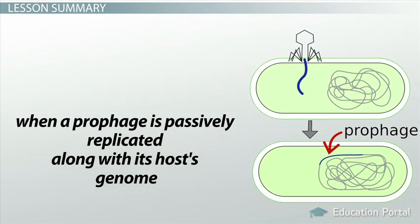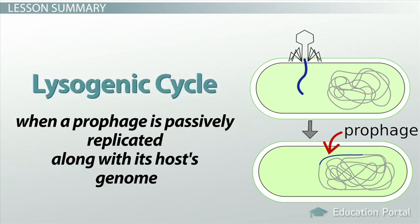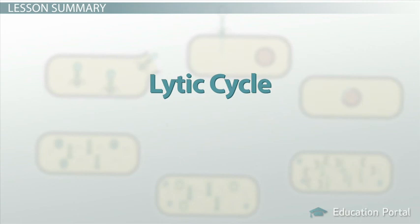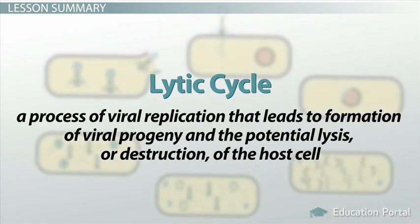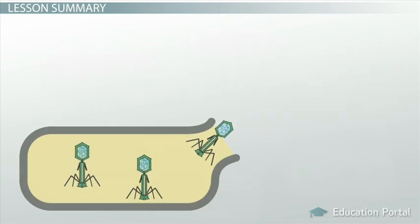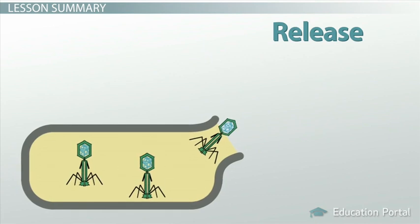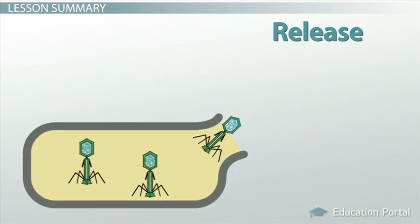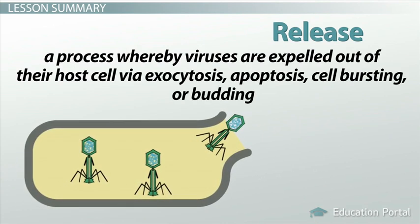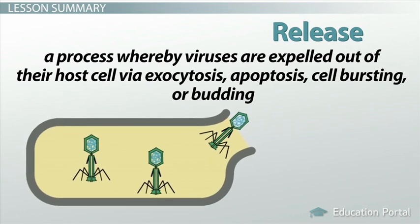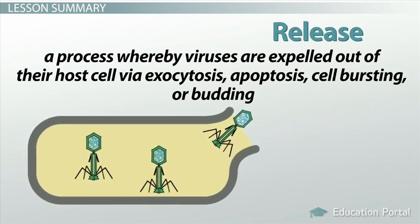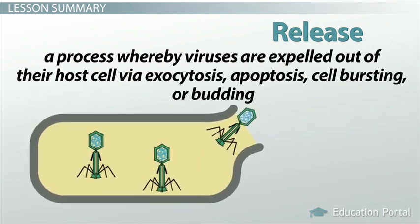When a prophage is passively replicated along with its host's genome, we term this the lysogenic cycle. Conversely, the lytic cycle is a process of viral replication that leads to formation of viral progeny and the potential lysis or destruction of the host cell. Regardless, the release of viral progeny out of its host cell is a process whereby viruses are expelled via exocytosis, apoptosis, or budding.